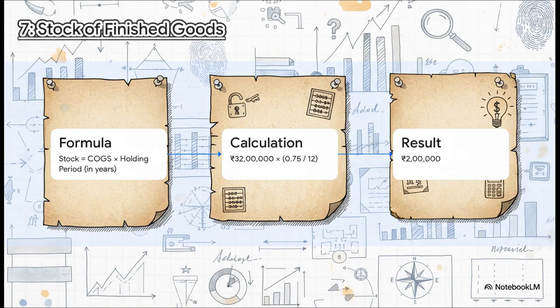Next up, finished goods. The company holds these for three quarters of a month before selling them. So, we need to convert that to a fraction of a year. That's 0.75 divided by 12. We multiply that by our cogs figure, and it reveals the value of finished goods in the warehouse is 2 lakh rupees. You see, this and the raw material are key parts of the company's working capital.